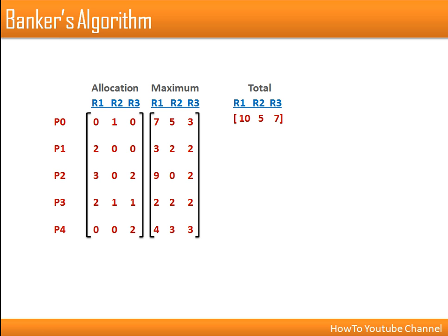This algorithm requires a declaration of the maximum number of resources required by each process. We are considering three types of resources and two matrices as shown in this slide. We are taking five processes with three resource types: ten of type R1, five of type R2, and seven of type R3. The maximum matrix shows that process P0 needs seven instances of R1, five of R2, and three of R3.